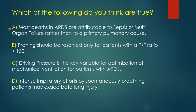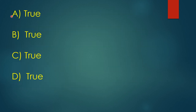Several important clinical questions: Do most ARDS patients die from sepsis or multi-organ failure, or from lung failure? Should proning be used for PF ratio less than 150, or for all ARDS patients? Is driving pressure an important variable to measure and use to optimize mechanical ventilation? Can a spontaneously breathing ARDS patient cause self-induced lung injury equivalent to ventilator-induced injury? The answer to all of these is true — and we will discuss each of them.